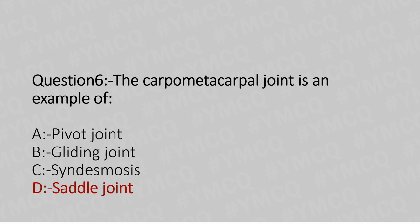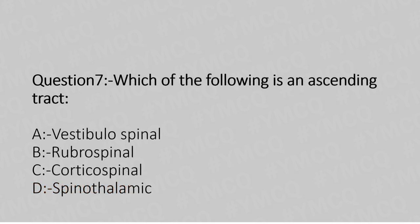Now let's move to question number 7. Which of the following is an ascending tract? Option A: vestibulospinal, option B: rubrospinal, option C: corticospinal, option D: spinothalamic. The answer is option D, spinothalamic.